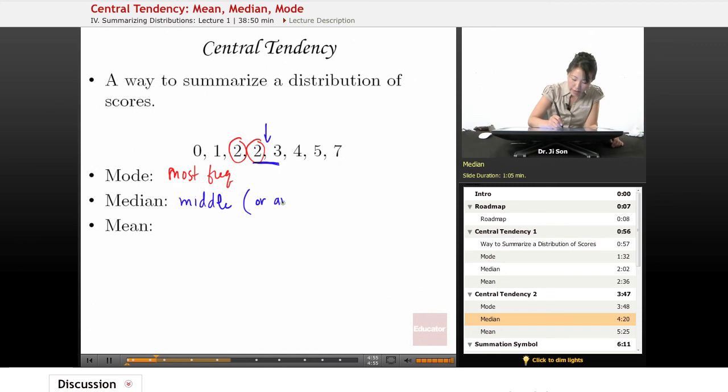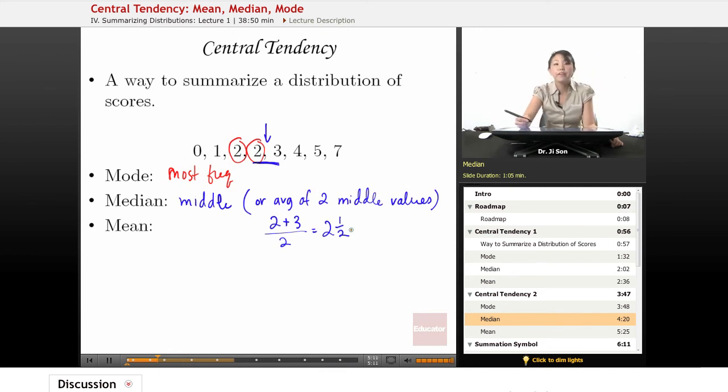So in this case, it would be 2 plus 3 divided by 2, so something like 2 and 1 half or 2.5. So that would be our median. Notice that our median has changed a little bit. Because we added something over on the smaller side of our distribution, our median has slightly shifted over.